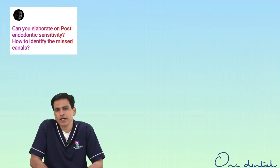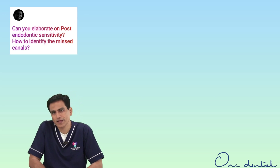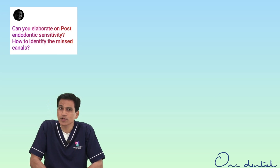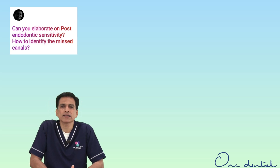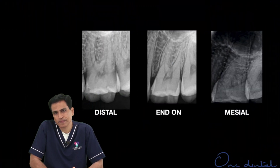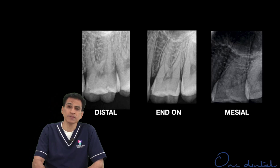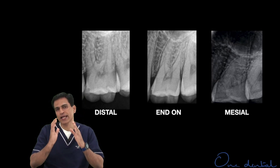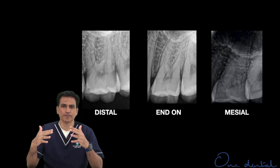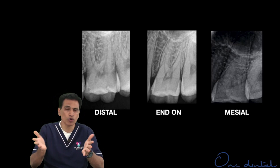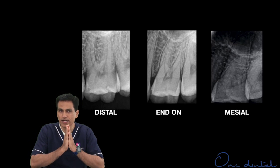The next step is radiography. We are working on a 3D object but a 2D image, so we need to understand that limitation. When you take an IOPA, please make multiple IOPAs — one with a mesial angulation and one with a distal angulation. The separation you get sometimes may show you that split and help you see extra branching. Sometimes a canal goes down and disappears — that also doesn't necessarily mean calcification but may indicate a split or extra canal.